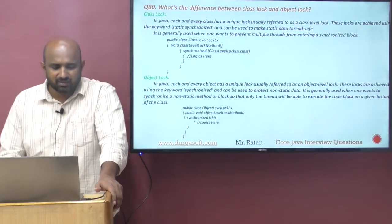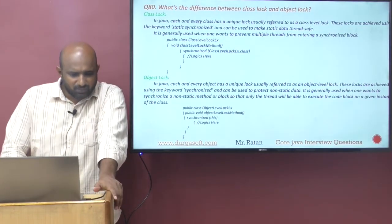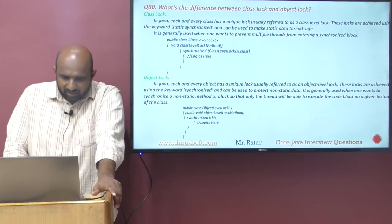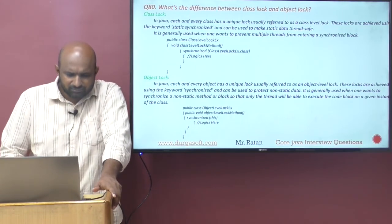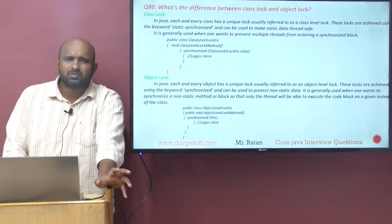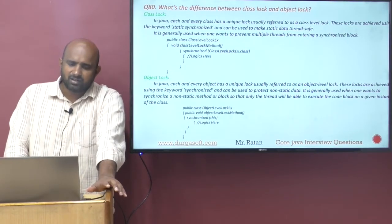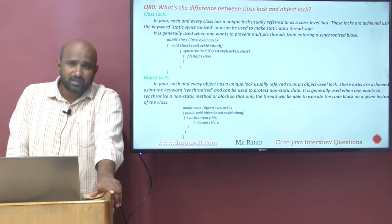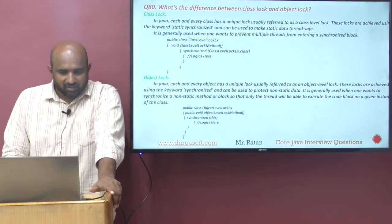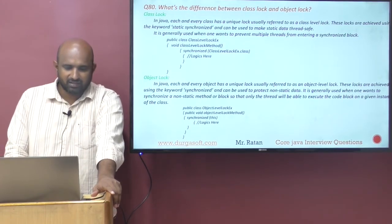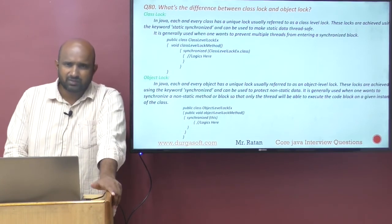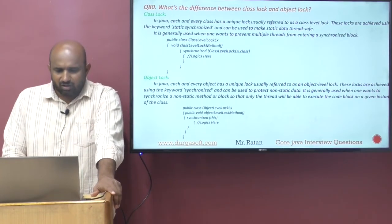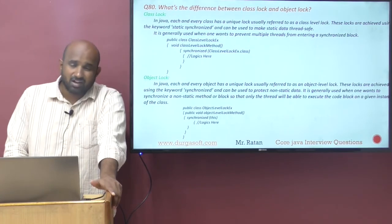The argument is basically `this`, right? That is called class level lock and object level lock. Synchronized block means only one thread is allowed access. On the object level, using the `this` keyword is specific to the object; at the class level, the argument should be the class name. Class level lock applies to the entire class — one lock for the entire class — and this is for static data. Object level lock means every object has its own lock, which refers to non-static data.